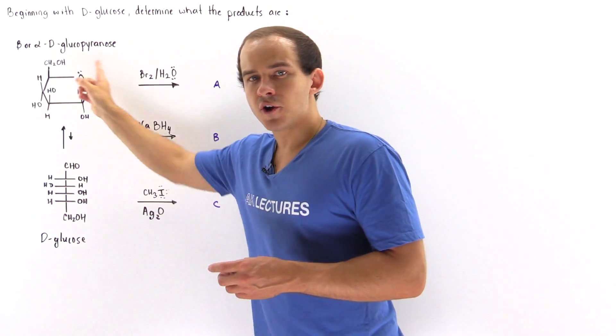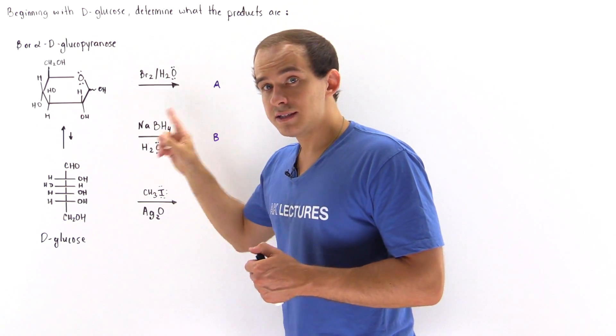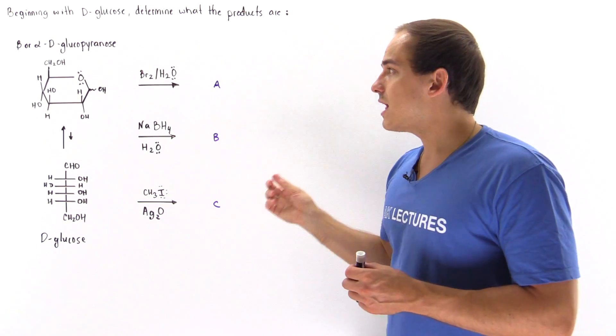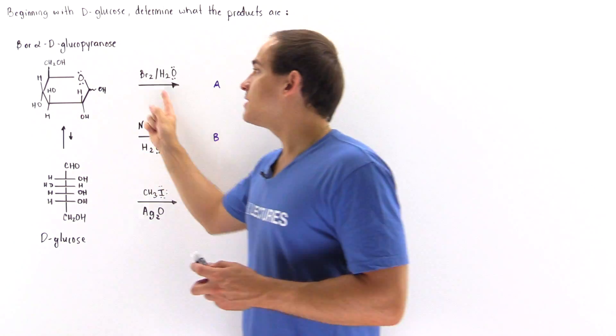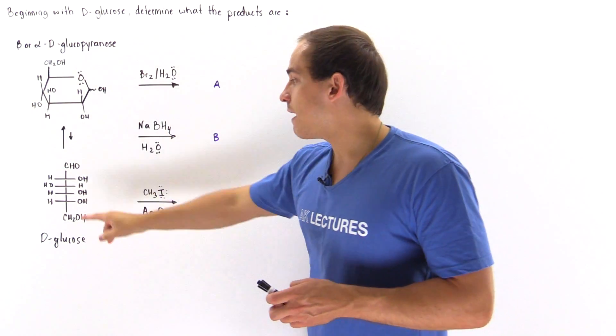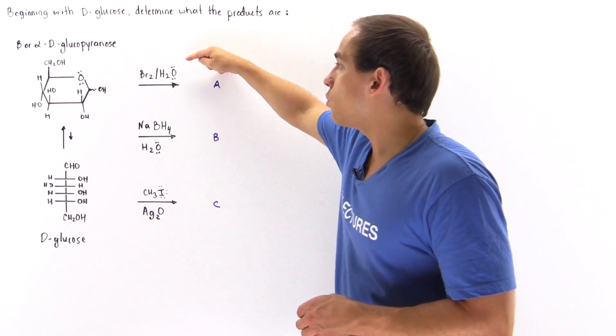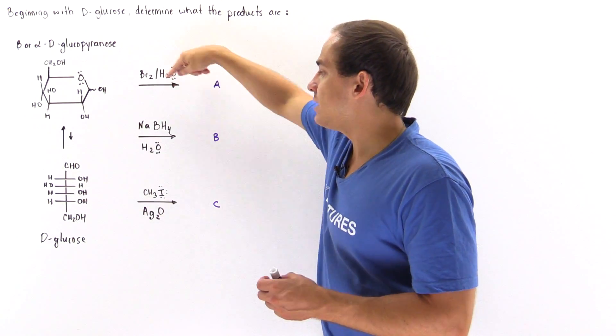Now the cyclic version of glucose, either alpha or beta D-glucopyranose, does not have an aldehyde—this is the hemiacetal version. The aldehyde is found on the open chain of D-glucose.